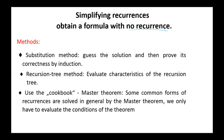In the substitution method, we guess the solution and then prove its correctness by induction. In the recursion-tree method, we evaluate the characteristics of the recursion tree — we did that in the merge sort algorithm. The third method, known as the master theorem or cookbook method, solves some common forms of recurrences in general. We only have to evaluate the conditions of the theorem.